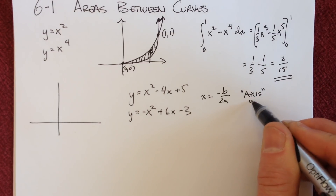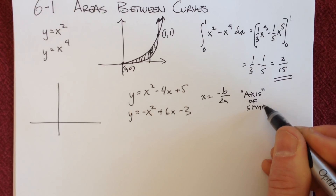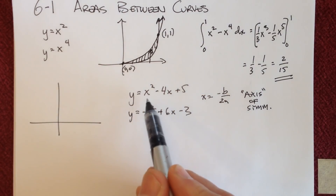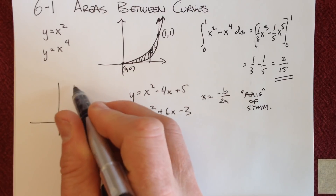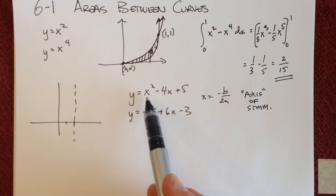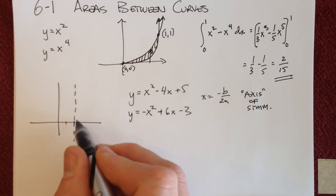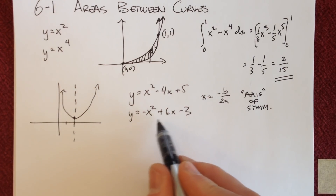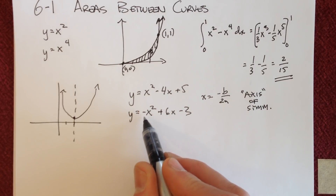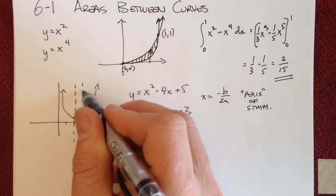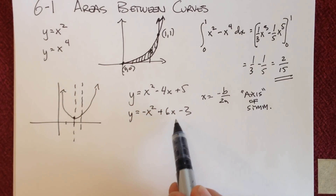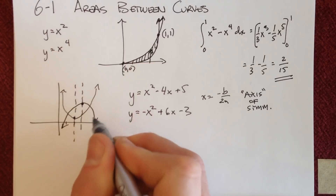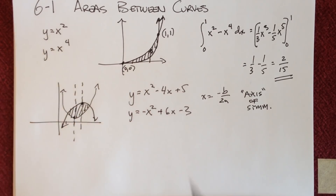For the axis of symmetry of the first parabola: negative (−4) over 2 gives positive 2. So the vertex is at x = 2. Plugging in 2: 4 minus 8 is −4, plus 5 is 1. This one opens upward. For the second parabola: negative 6 over negative 2 is positive 3, so its axis of symmetry is at x = 3. Plugging in 3, the vertex is at y = 6, and this one opens downward.